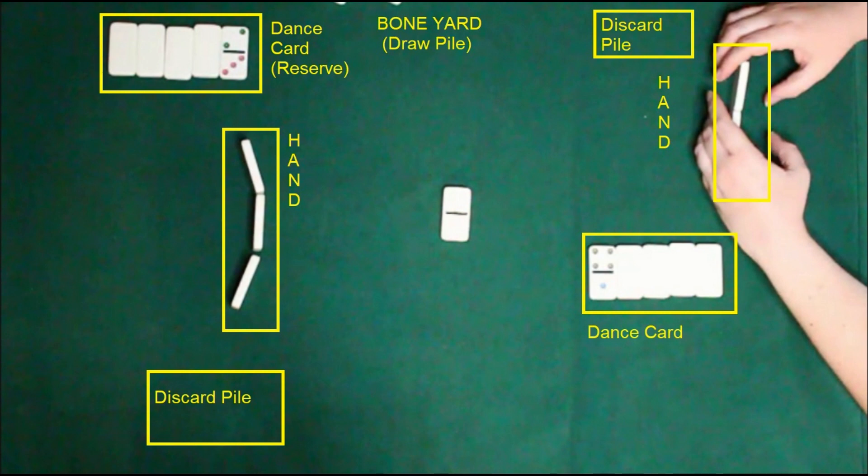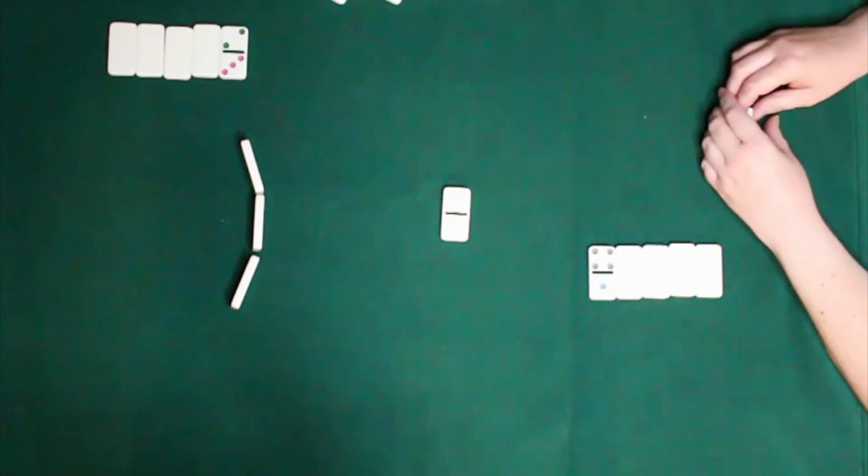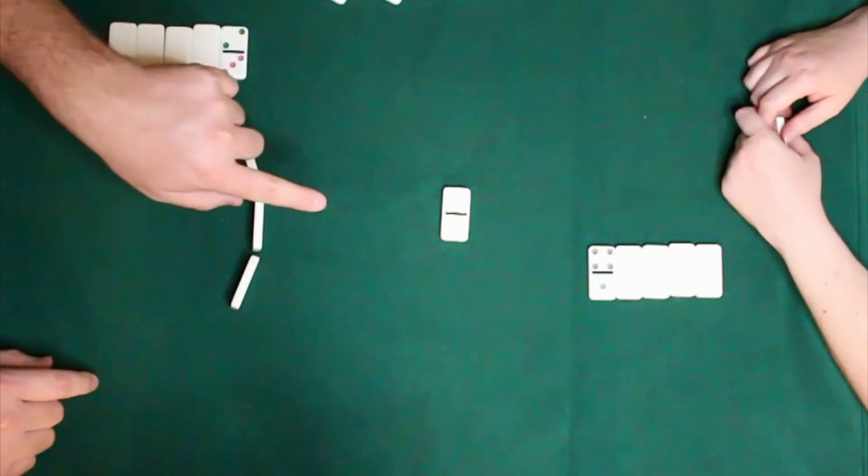If you're able to get your dance card empty and your opponent has five dominoes still in their dance card, then you'll get two points. The first player to reach ten points will win. If you somehow win by eleven, you owe the other player a lemonade. At least that's according to the rules on Paget.